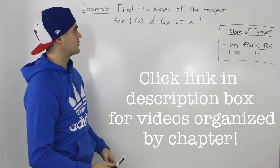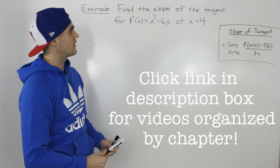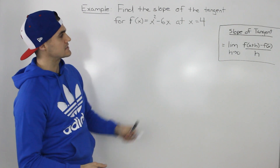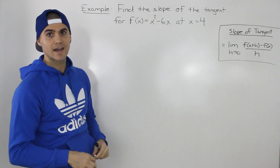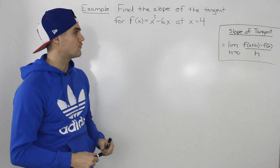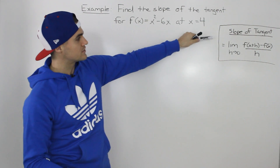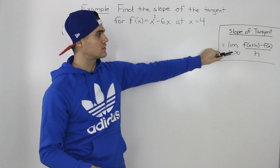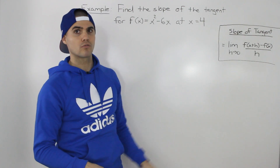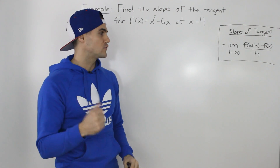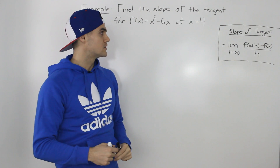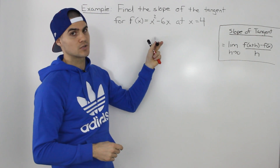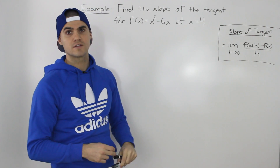In this video we're going to do an example where we have to find the slope of the tangent for f(x) = x² - 6x at an x value of 4. I wrote out the expression for the slope of the tangent that we went over in the overview video, so if you didn't watch that video make sure you do before continuing on with this example.